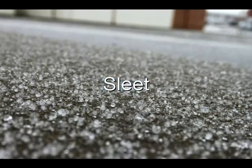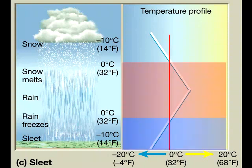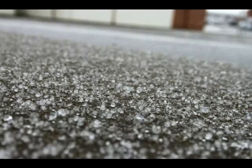Sleet refers to small ice particles that form when raindrops freeze while falling through a cold air layer. Sleet requires the presence of an inversion — an above-freezing air layer must overlie a sub-freezing layer near the ground. When small pellets of ice reach the ground, they are roughly the size of raindrops.